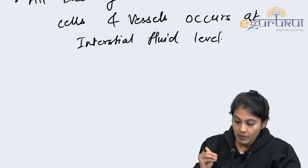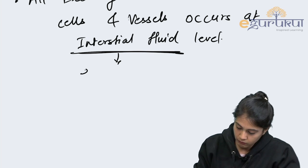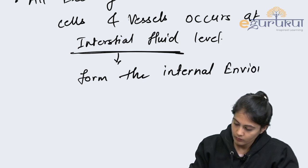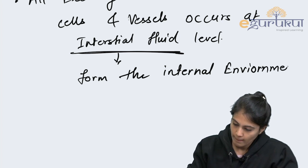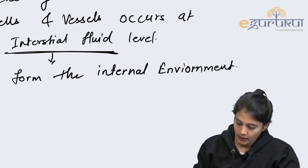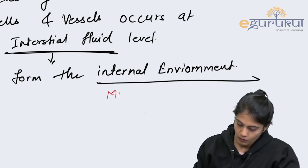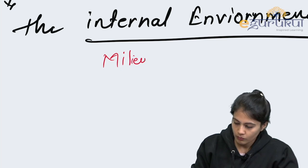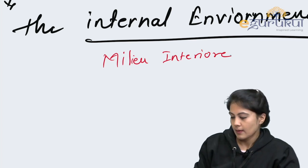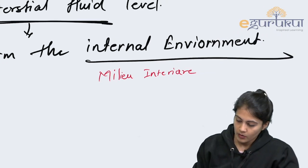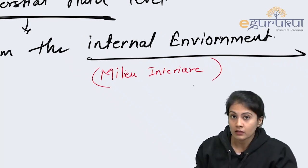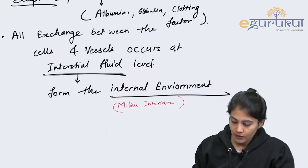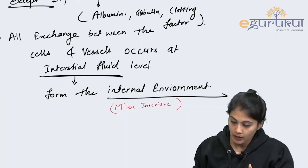Interstitial fluid has a major role, and it forms the internal environment of the body, which is known as milieu intérieur. We already discussed in the beginning that it is known as milieu intérieur, coined by W.B. Cannon but introduced by Claude Bernard, who is the father of physiology. So interstitial fluid is important for the milieu intérieur, or internal environment.